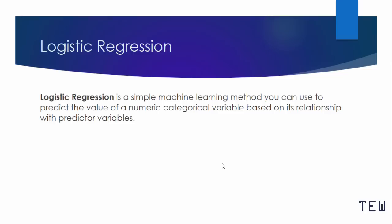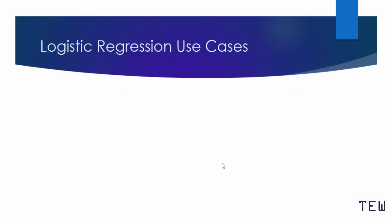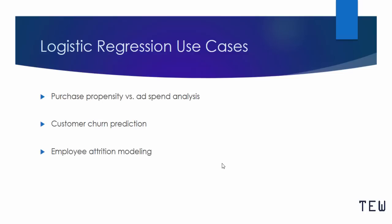This is called a customer churn model. Logistic regression differs from linear regression in that with logistic regression you are predicting categories for ordinal variables, whereas linear regression predicts values for numeric continuous variables. Examples of where logistic regression comes in handy include propensity versus ad spend analysis, customer churn prediction, employee attrition modeling, and hazardous event prediction.